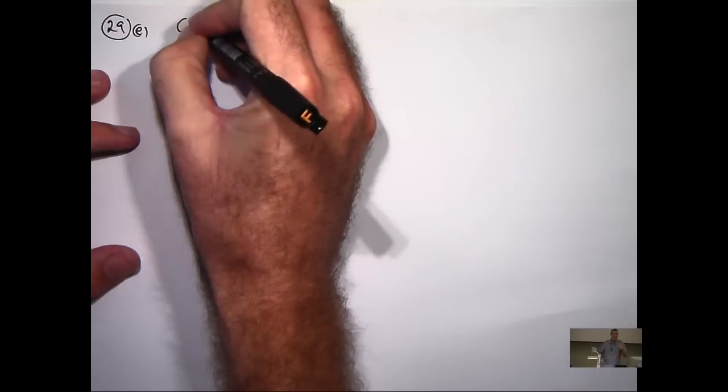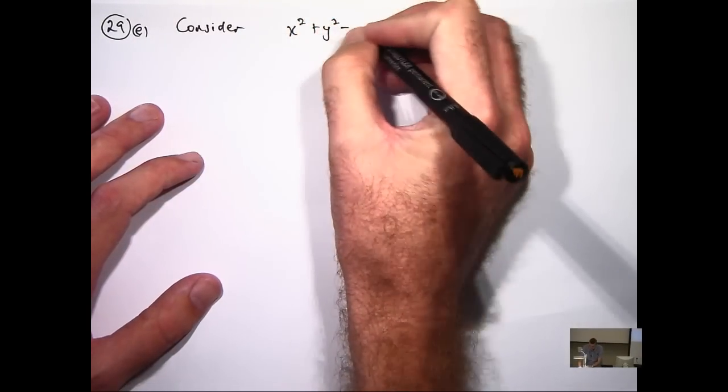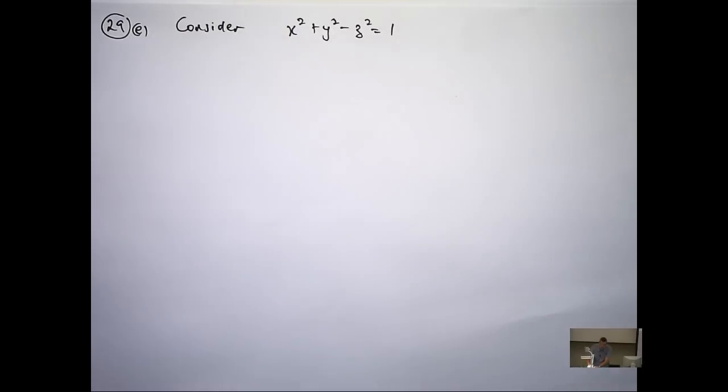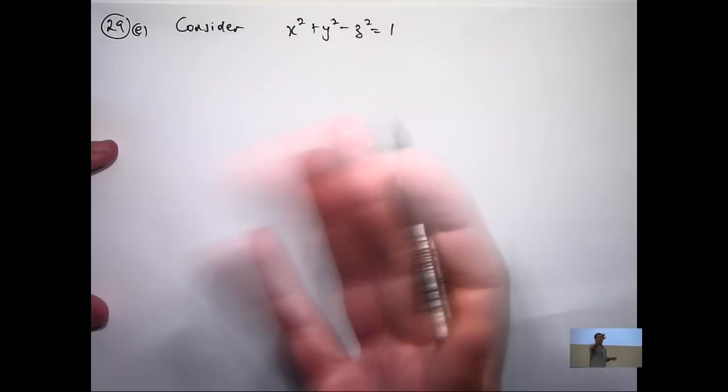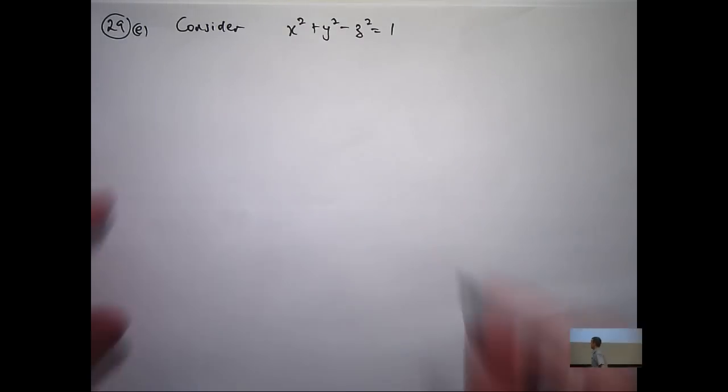So let's have a look. 29E. Now first of all, notice that it's not a function of the type Z equals F of X comma Y. It's sort of like an implicit type relationship. You can rearrange it, but for my money, it's actually easier just to leave it the way it is. What I mean is you could make Z the subject and get a plus and minus square root sign, but I didn't do it that way.